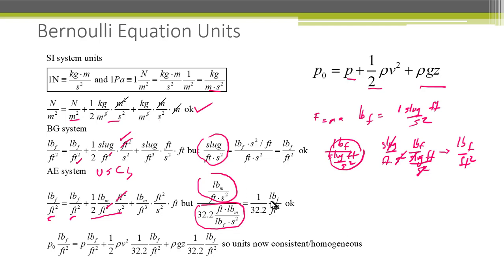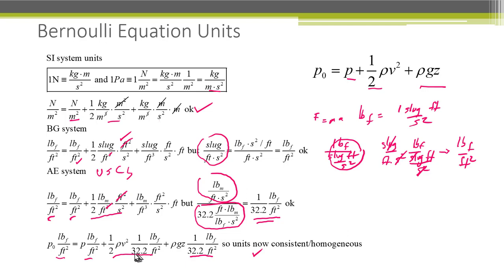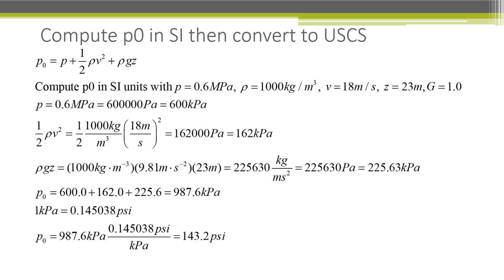We end up with pound force per foot squared. So in this equation you apply the 32.2 conversion factor to the second and third terms, making the equation consistent and homogeneous. Note that pound force and pound mass do not cancel numerically — you must use the 32.2 conversion factor, or you will be a factor of 32.2 off in your answers.